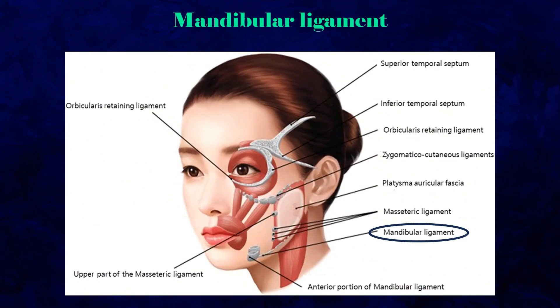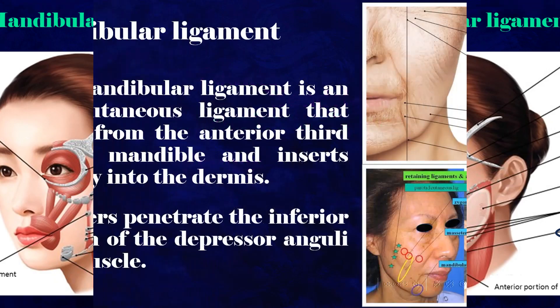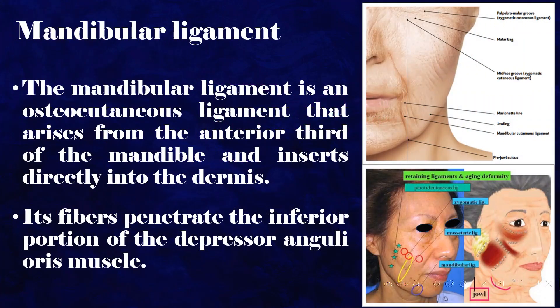The mandibular ligament is an osteocutaneous ligament that arises from the anterior third of the mandible and inserts directly into the dermis. Its fibers penetrate the inferior portion of the depressor angulae oris muscle.